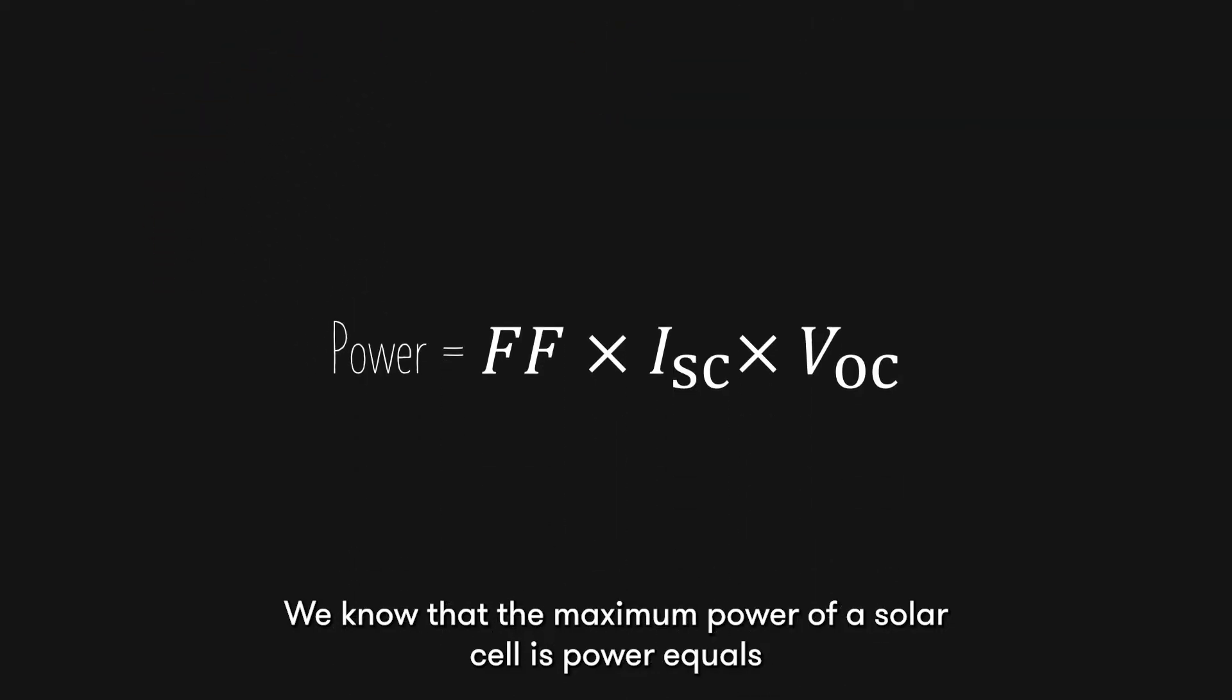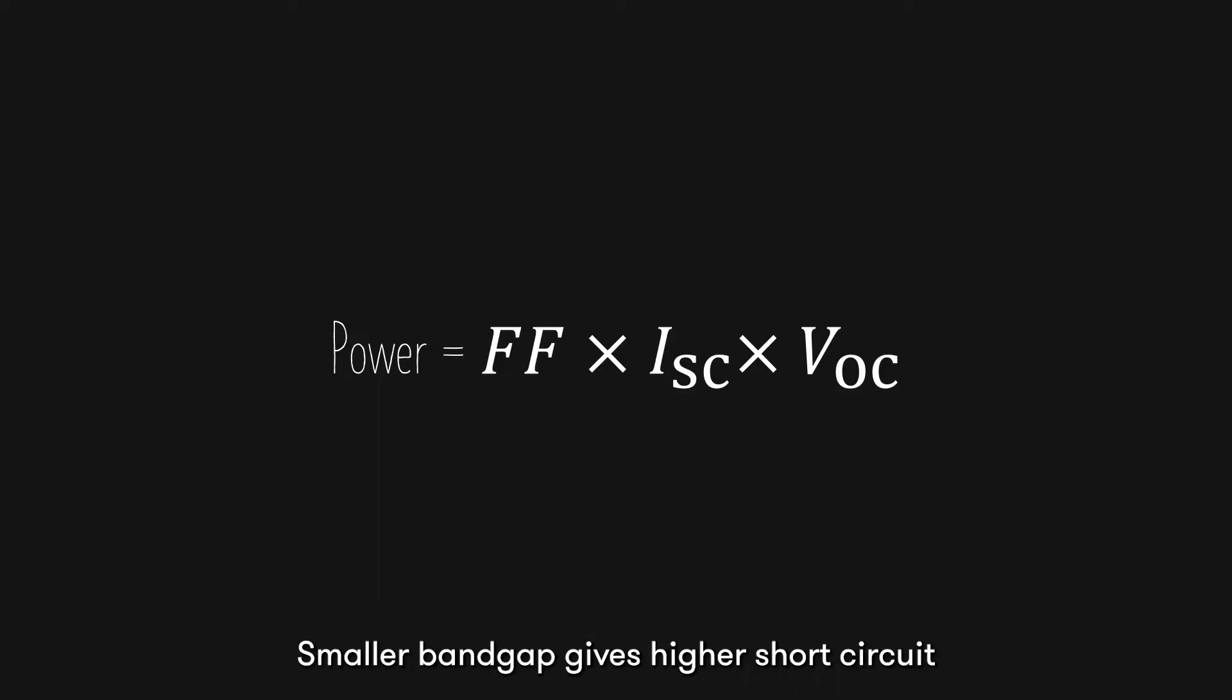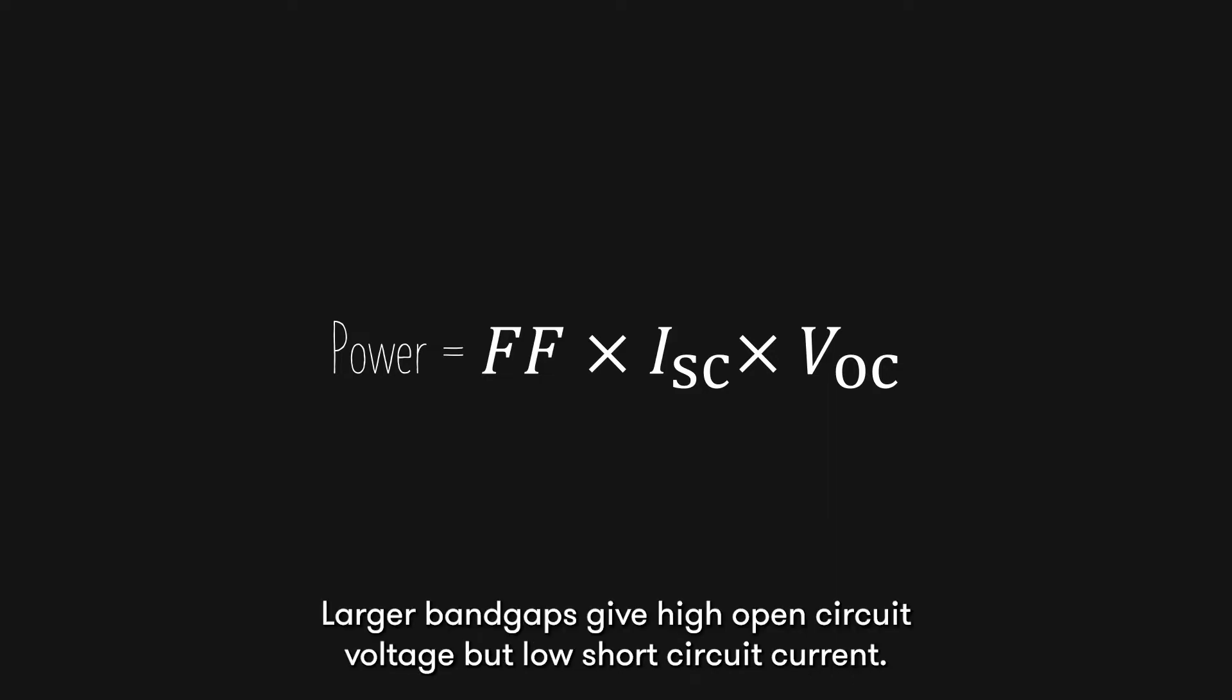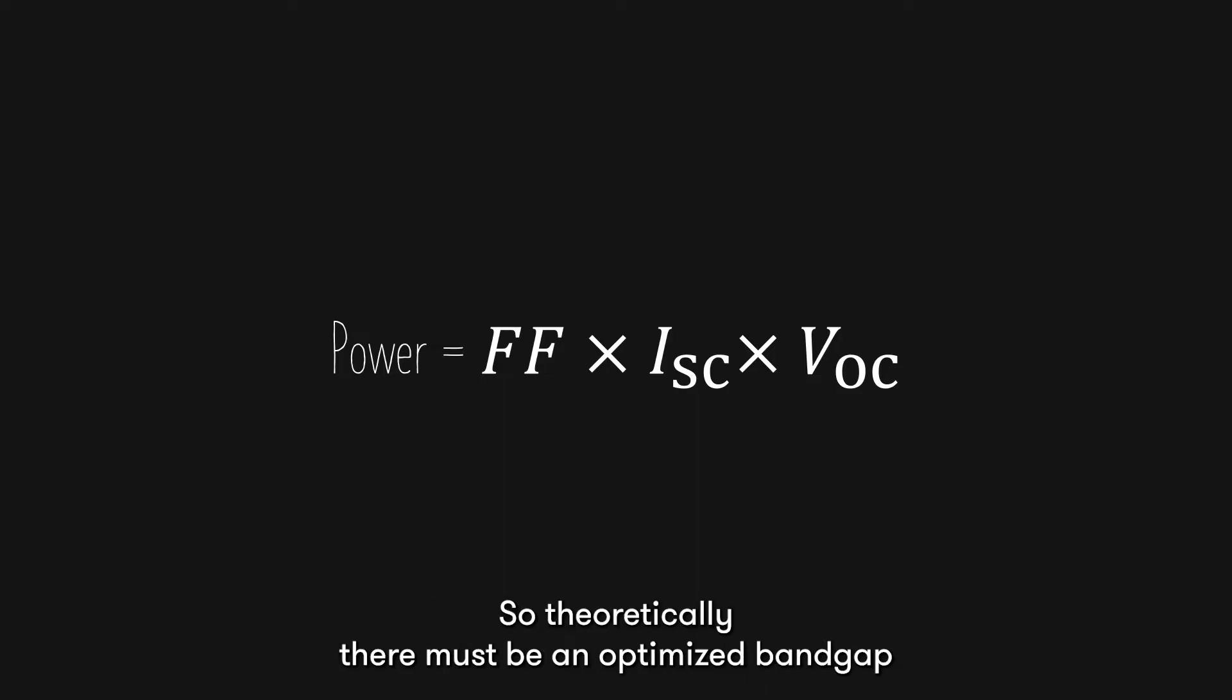We know that the maximum power of a solar cell is power equals the fill factor times short-circuit current times open-circuit voltage. Smaller band gaps gives higher short-circuit current but low open-circuit voltage. Larger band gaps gives high open-circuit voltage but low short-circuit current.